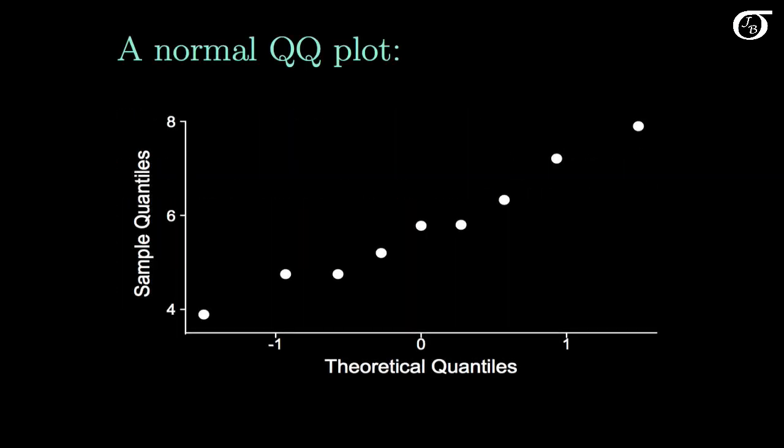Here's an example of a normal quantile-quantile plot for a sample of size 9 from a normally distributed population. These points fall in a pretty straight line. We sometimes draw a line in for a little perspective — more on that line a little bit later.